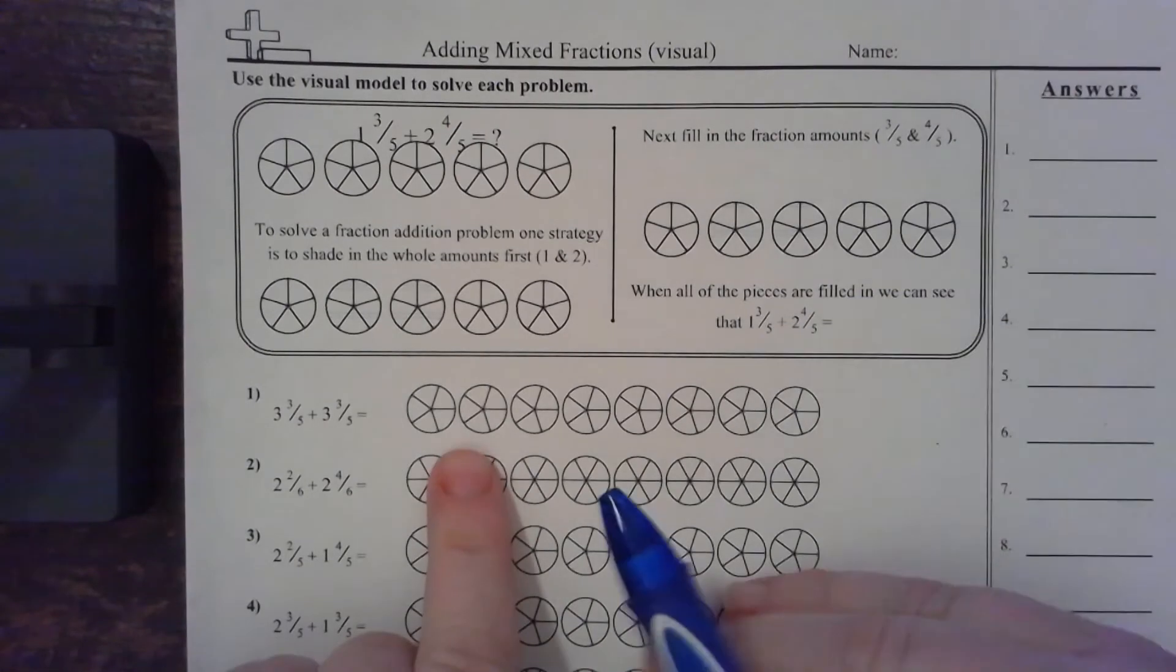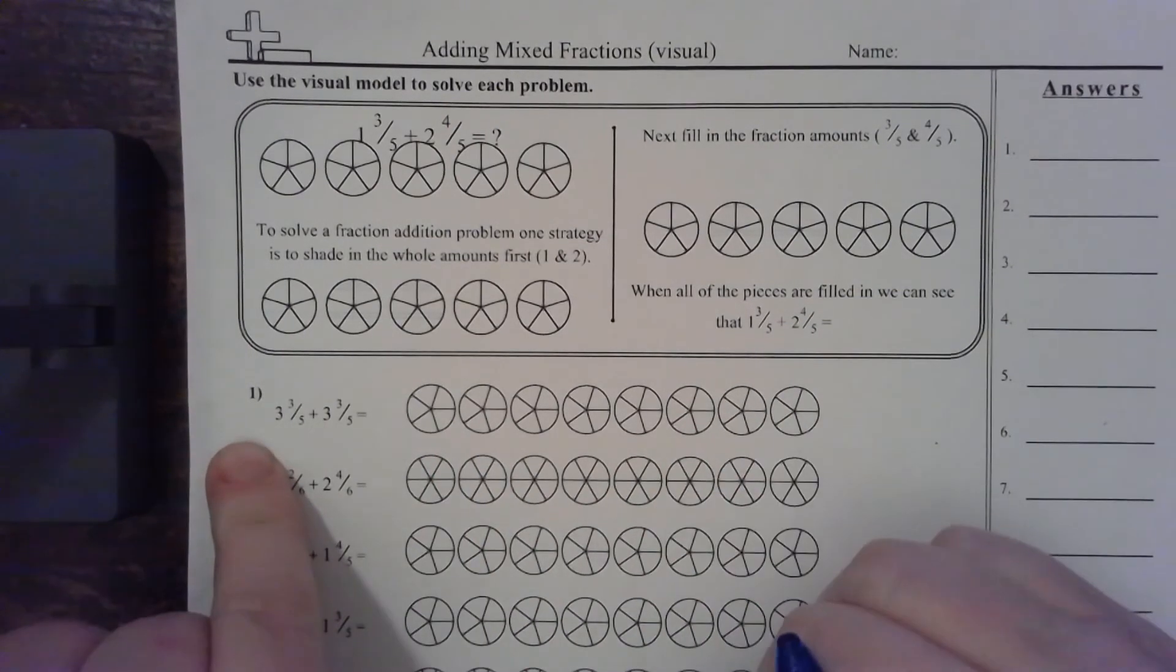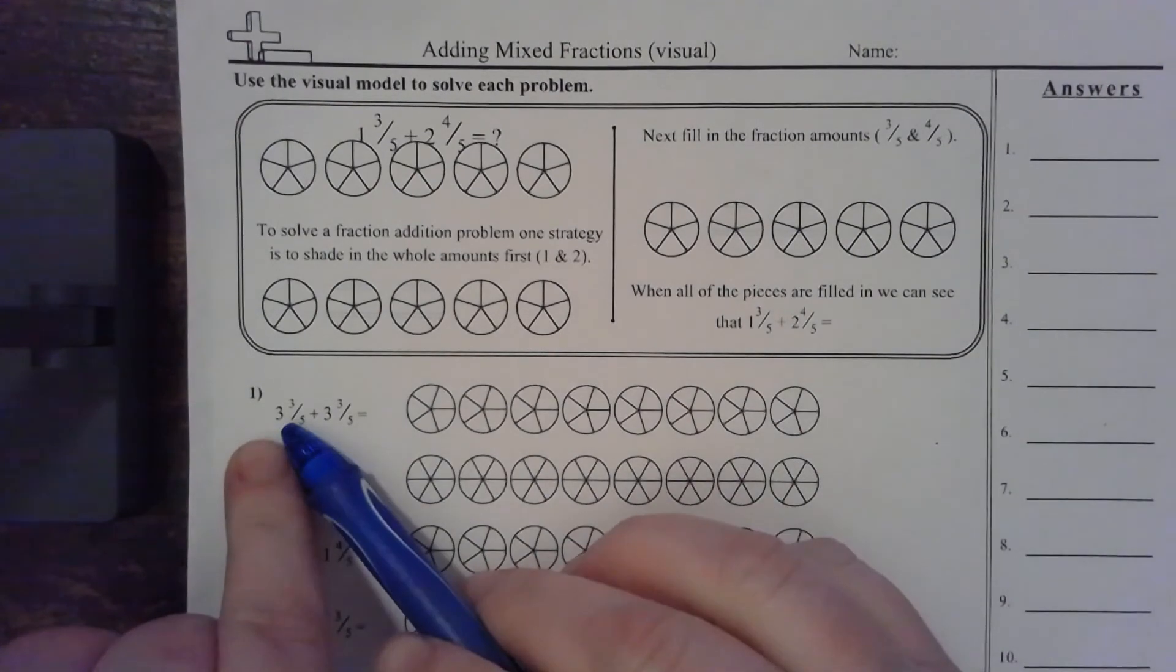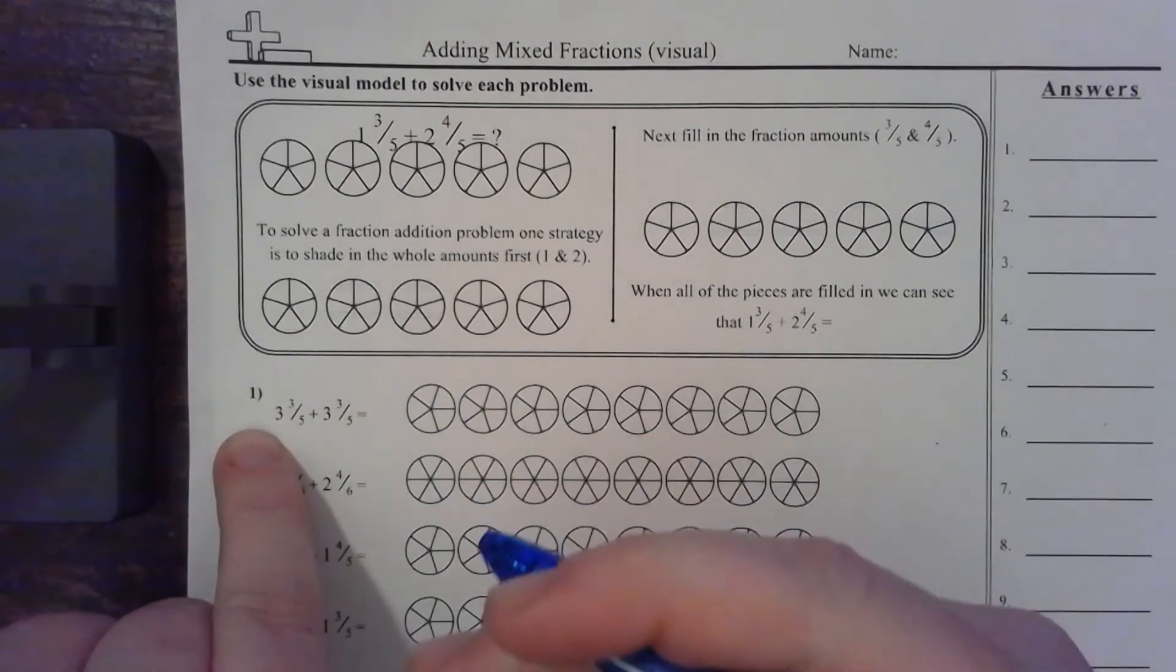When you add mixed numbers, it's just the same thing we're doing when we add fractions, except we got some whole numbers. That's about it. But the one thing I wanted to stress is that, and this is going to be really important when we get to subtracting whole numbers, that just because it's a whole number, like the number three, does not mean that it has nothing to do with a fraction.